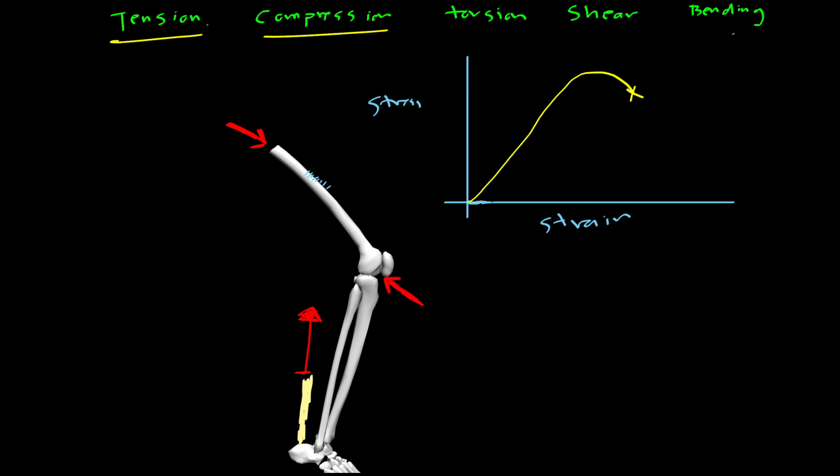For a bone, bones are much stronger in compression than they are in tension, which makes sense given their structural role. So maybe if this is, let's say this is the femur in compression, if we look at what the strength of the femur in tension looks like, meaning if we pull on it like this, not really a force that the femur experiences very much of except from muscle forces,